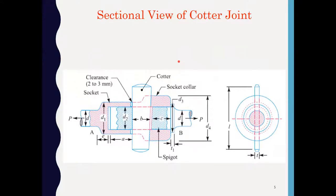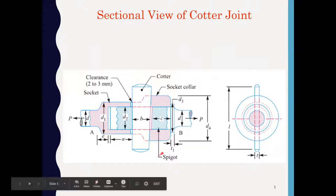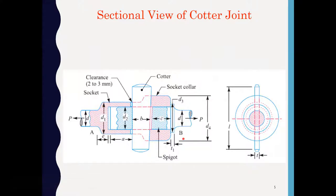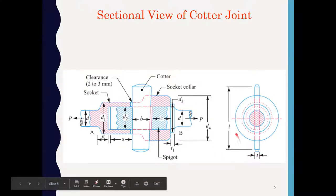This is the sectional view of the cotter joint and the various notations are shown in this view. D is the diameter of the rod, D2 is the outside diameter of the spigot, D1 is the outside diameter of the socket, T is the thickness of the cotter, and L is the length of the cotter.